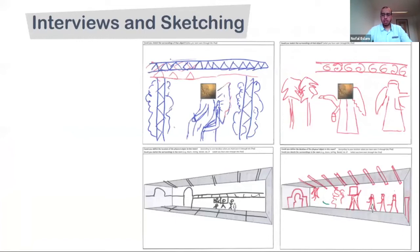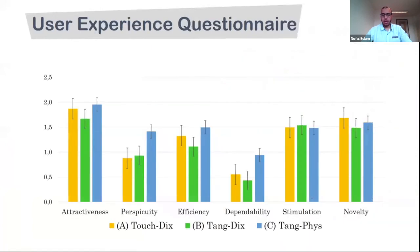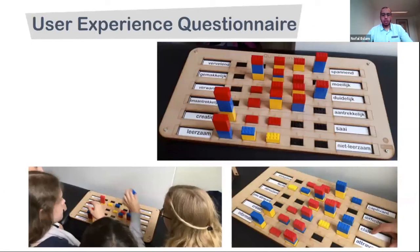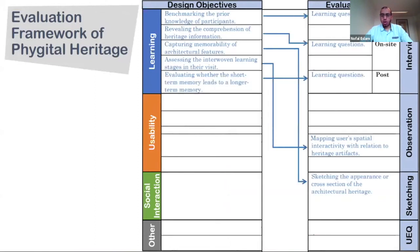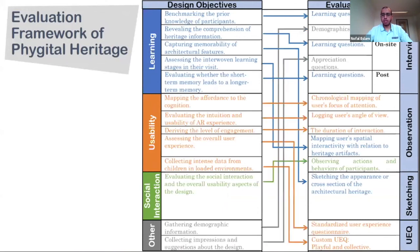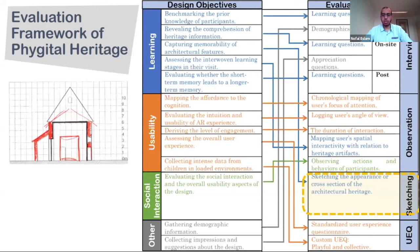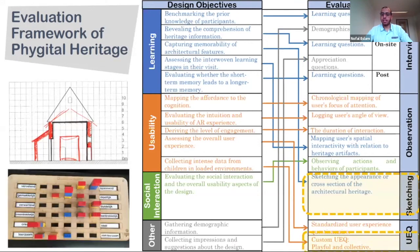This study yielded very interesting results in terms of remembering different architectural features. The last evaluation method is a user experience questionnaire: after the interviews, participants filled in a questionnaire to express their subjective feelings, impressions, and attitudes. For children, the questionnaire was designed as a tangible extension of the game experience using Lego blocks. We conclude the lesson by presenting an evaluation framework of Vegetal Heritage, indicating when and how to use different methods based on design objectives — for example, which methods are appropriate for learning objectives. The framework also presents novel evaluation methods such as sketching to report on learning and memorability of architectural features, and the playful user experience questionnaire to collect data from children in loaded environments.